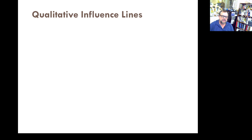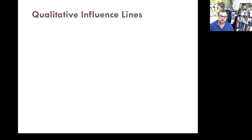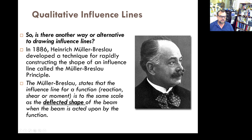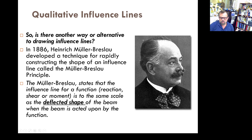Hello guys. Qualitative influence lines. Drawing influence lines sometimes can be a hassle. It takes a lot of time and a bunch of calculations, especially without sufficient practice — and we're only talking about statically determinate structures. Just imagine statically indeterminate structures. But Heinrich Müller-Breslau came in 1886 with an approach that allows you to draw influence lines without any calculations. This principle is based on the principle of virtual work, and the demonstration can be done really easily.